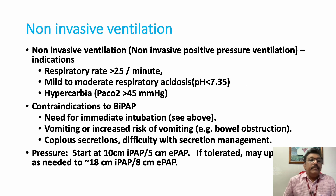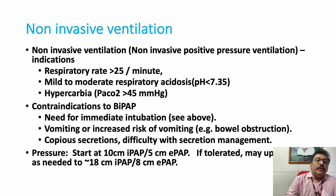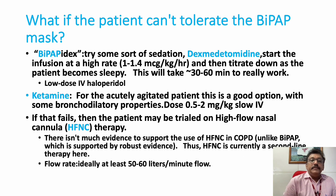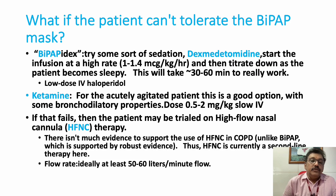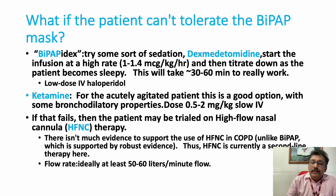If the patient is not improving with simple oxygen devices, non-invasive ventilation (NIV/BiPAP) can be used — indicated when respiratory rate is above 25/min, with mild to moderate respiratory acidosis or hypercarbia. Avoid NIV if the patient has a low GCS, severe vomiting, or requires immediate intubation. If the patient is agitated and not tolerating the mask during BiPAP, dexmedetomidine or ketamine can be tried; alternatively, high-flow nasal cannula can be used, though it is not the preferred choice over BiPAP.